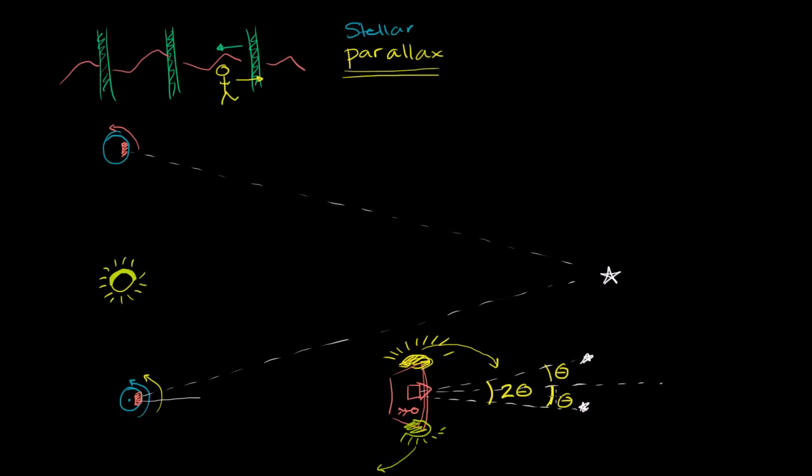Because if you think about it, this theta right over here is the same as this angle. If this is straight up, that is looking straight up into the night sky, this would be the angle theta. If you know that angle from basic trigonometry, or actually even basic geometry, if you say this is a right angle over here, this would be 90 minus theta.